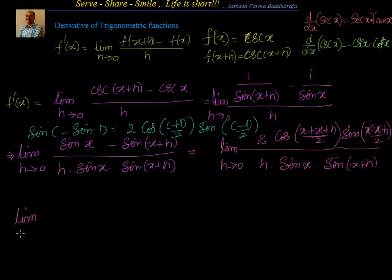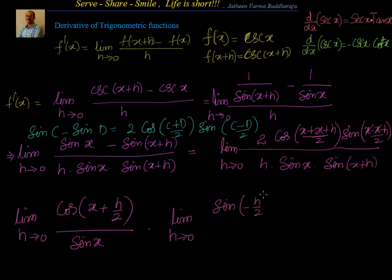That is limit of h tends to 0, I have cos of x plus h by 2 divided by sin of x, multiplied with limit of h tends to 0, sin of minus h by 2 divided by h by 2.